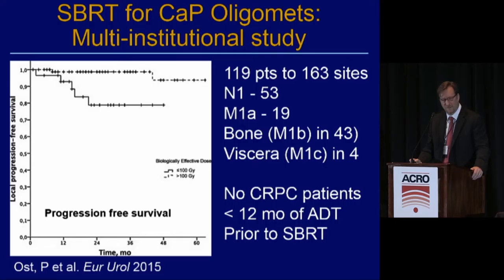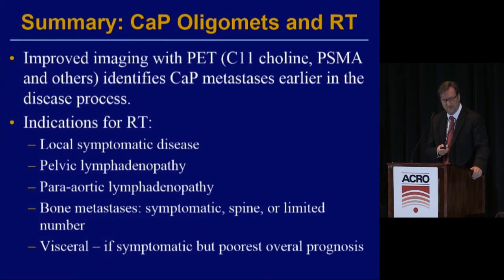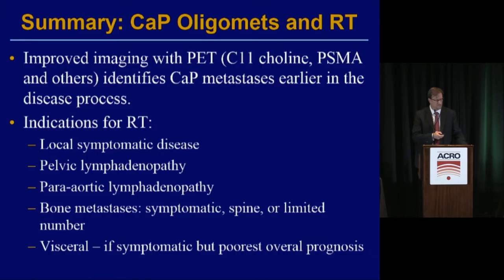Moving on to bone metastasis and SBRT for oligometastatic prostate cancer: a multi-institutional study led by Pete Oost from Ghent, Belgium included 119 patients to 163 sites. 53 also had lymph node positive disease: M1A in 19 patients, bone M1B in 43 patients, visceral in 4 patients. There was no castrate-resistant prostate cancer. Patients had less than 12 months of ADT prior to SBRT, and the retrospective study found a dose response depending on biologically effective dose.